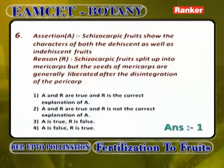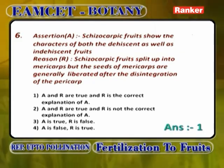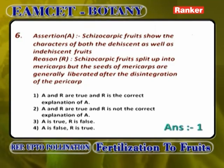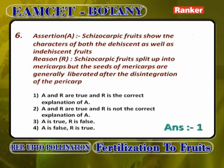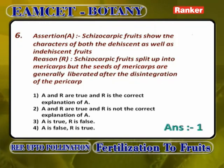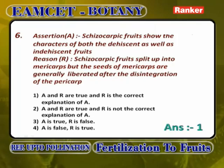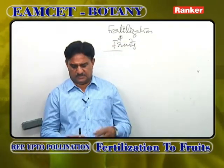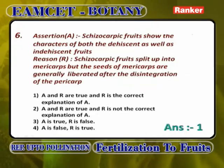Schizocarpic fruits show characters of both dehiscence as well as indehiscence fruits. Schizocarpic fruits split up into mericarps is correct. The seeds of mericarps are generally liberated only after the disintegration of pericarp is correct. So, A and R are correct, and R is the correct explanation of A.